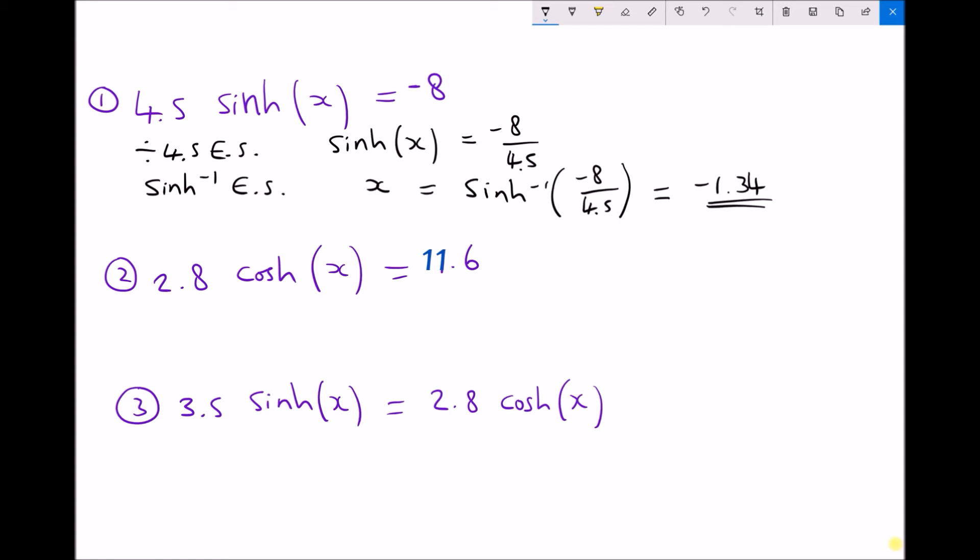And if we think back to our hyperbolic sine graph we have something like this. And what we've just found is that when x equals minus 1.34 the value of the function is minus 8. So although it's not sketch to scale there we get the idea that our solution is more than likely correct.